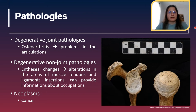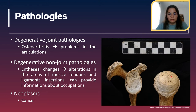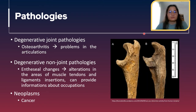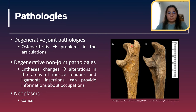Degenerative joint pathologies are also known as osteoarthritis — basically problems in the articulations that can result in bone growth, as you can see here in this head of the humerus, and in more serious states eburnation, which has a porcelain appearance. Then degenerative non-joint pathologies, or enthesial changes, are alterations in the areas of muscle and tendon insertions, and can provide information about the activity of populations as they are usually related to physical effort.